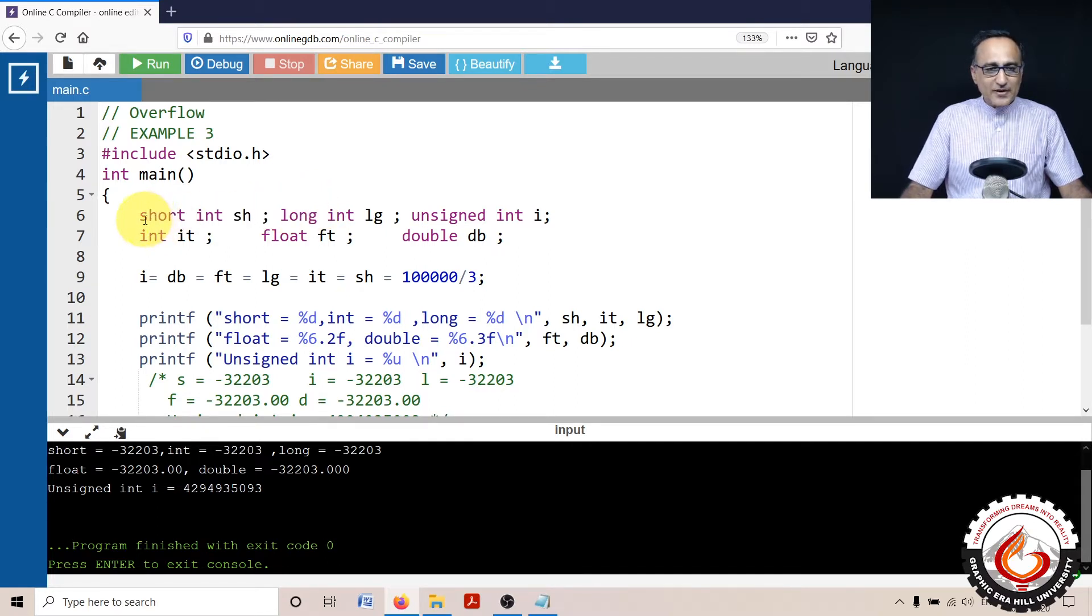The declaration of data types is the same. This data type is the same for what I used in the previous code, except that I have declared an unsigned int i.